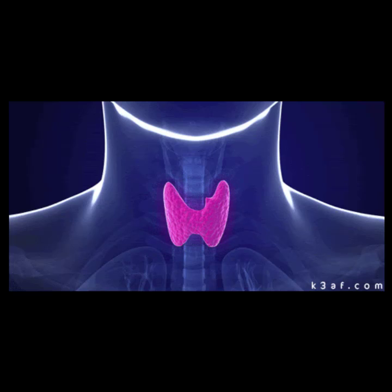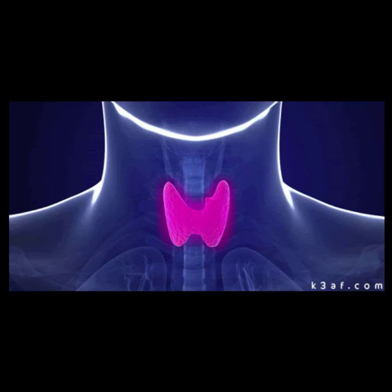The thyroid is a small butterfly-shaped gland that sits in the anterior neck. It is the only organ that can metabolize iodine in the body. It uses iodine to make triiodothyronine, or T3, and thyroxine, T4 — two hormones that help regulate activity in all cells of the body. The lobes of the thyroid are connected by a bridge of tissue called the isthmus. Normal lobe measurements in the adult average between 4 and 5 centimeters, and the isthmus typically measures less than 5 millimeters.